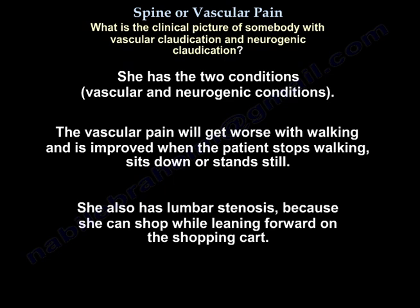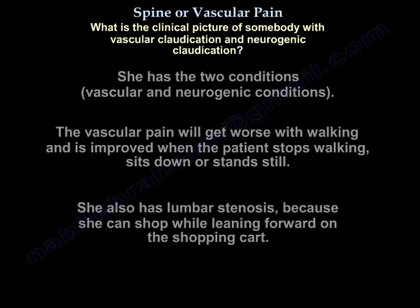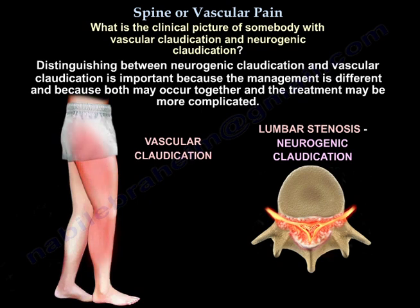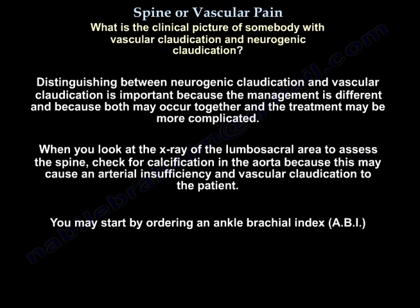The vascular pain gets worse with walking and is improved when the patient stops walking, sits down, or stands still. The patient also has lumbar stenosis because she can shop while leaning forward on the shopping cart. Distinguishing between neurogenic claudication and vascular claudication is important because the management is different, and because both may occur together, making treatment more complicated. When reviewing x-rays of the lumbosacral area, check for calcification in the aorta, as this may indicate arterial insufficiency and vascular claudication. You may start by ordering an ankle-brachial index, ABI.